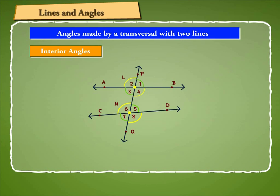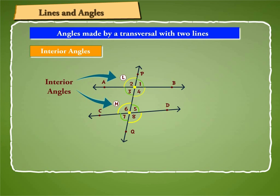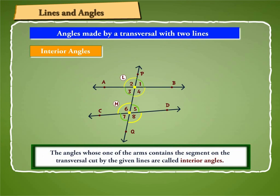Also, angle 3, angle 4, angle 5 and angle 6 are such angles whose one of the arms contains the segment LM. These are interior angles. Hence the angles whose one of the arms contains the segment on the transversal cut by the given lines are called interior angles.